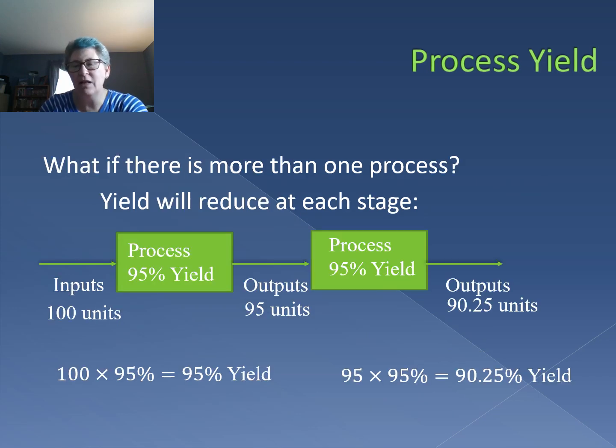Now, many processes have sub processes or many different activities, and the yield can reduce at every stage. In this case, we have two sub processes, each with 95% yield. We start with 100 units, but at the end of the first process, we're now down to 95. Now only 95 units are entering the second sub process, and now we're down to 90 units. You can see how rapidly the number of good units can reduce as you go through your overall process.